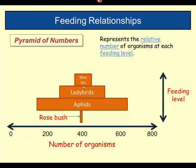Sometimes it gets a little bit confusing. Here's a different sort of pyramid of numbers — this one looks a bit skewed. Rather than counting the number of rose leaves, we've just got it as one bush. One bush is fed upon by hundreds of aphids, which are fed upon by a few ladybirds and very few blue tits. This shows another way of representing it — the rosebush represents one bush rather than all the thousands of leaves we know are present on that bush.